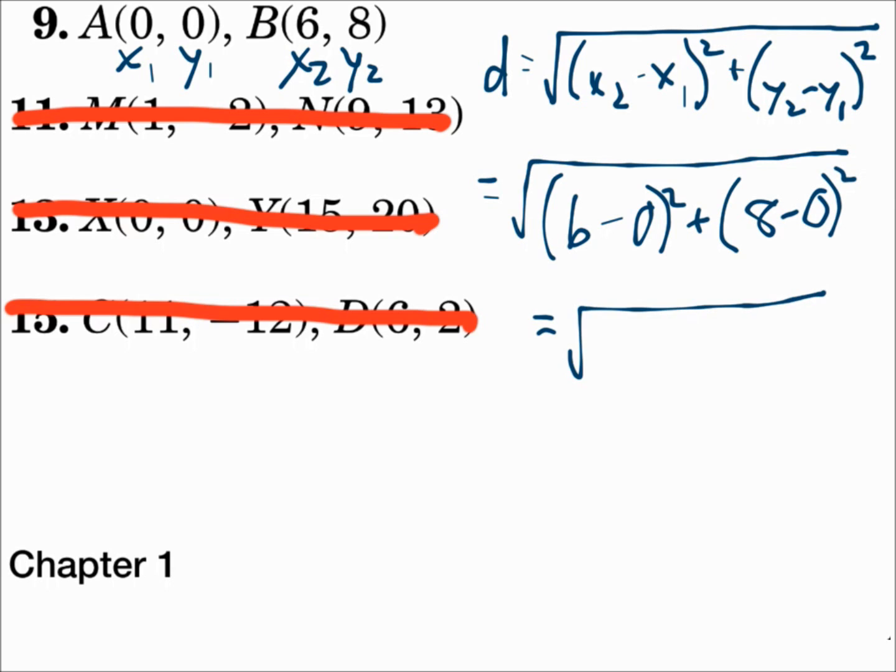6 minus 0 is 6, squared is 36. 8 minus 0 is 8, squared is 64. That's the square root of 100, which is 10.